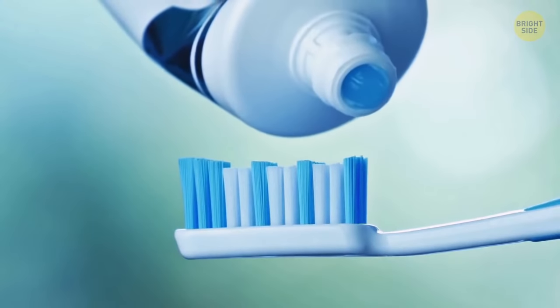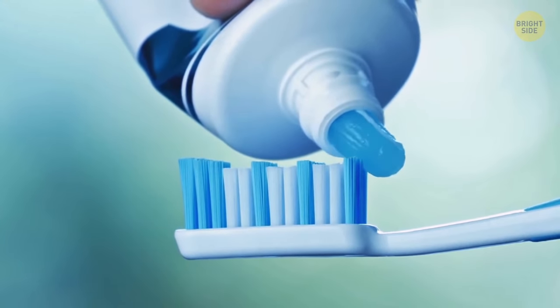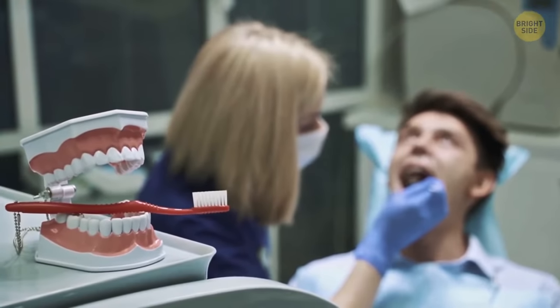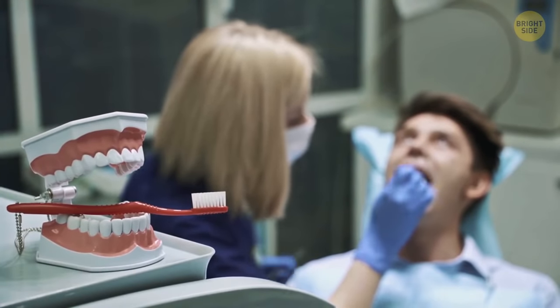The blue or any other dark color bristles on your toothbrush are meant to remind you when it's time to get a new one. If you see that bristles have become pale, change the toothbrush or its head.